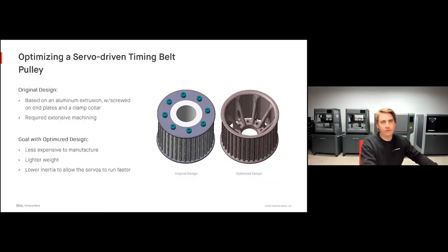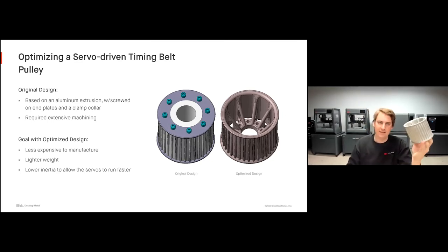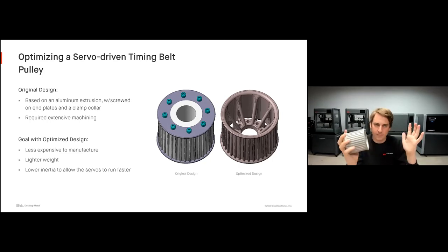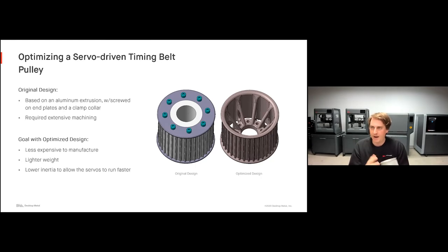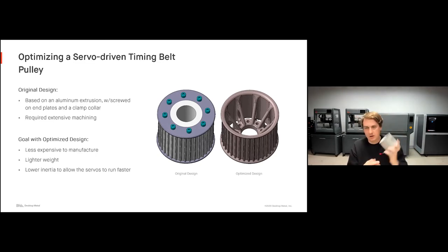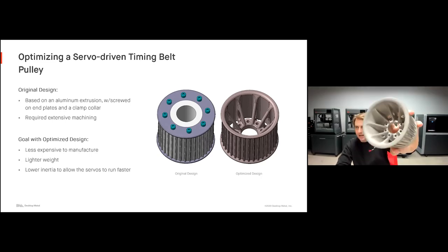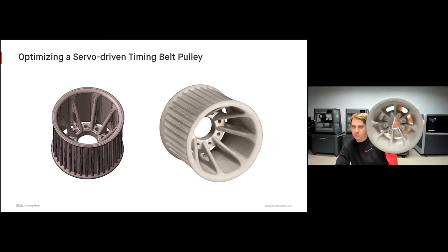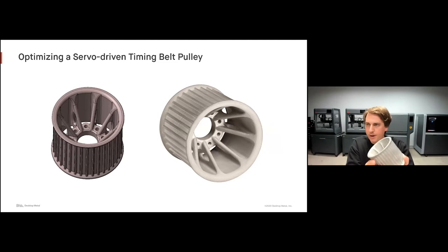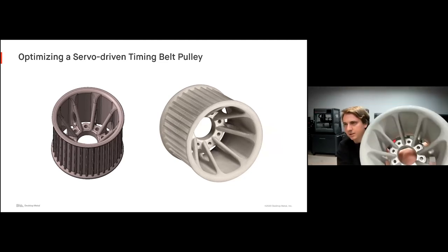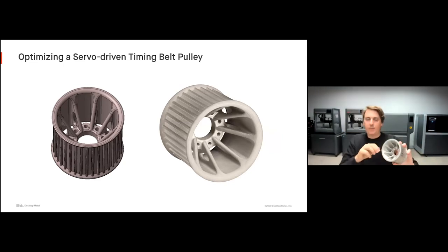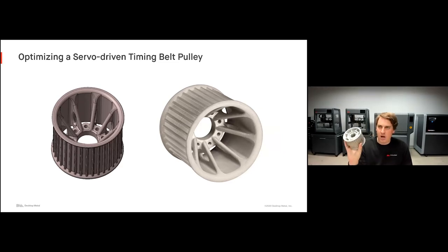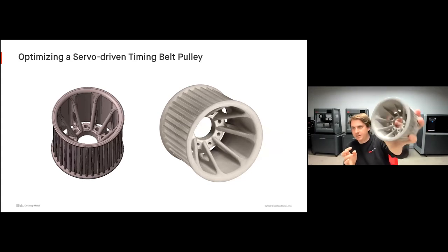Another great example is this servo-driven timing belt pulley for a manufacturing environment. The original design, based on aluminum extrusion with two collar clamps and end plates, required extensive machining and was not optimized. The goals were to reduce cost, lighten the weight, and lower inertia to allow servos to run faster. The optimized design features internal ribs and lightweighting that would be impossible to machine, going from a multi-part assembly down to just one geometry — produced faster, more affordably, and resulting in a higher-optimized, lower-weight component.